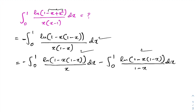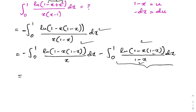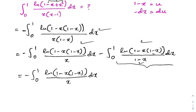Then to evaluate this integral, I am going to use a substitution. Here we have 1 minus x, and here also 1 minus x, so I am going to take 1 minus x equal to u. Then differentiating, minus dx equals du. Now I am going to rewrite this integral: minus integral from 0 to 1, natural log of 1 minus x times (1 minus x) over x dx minus...